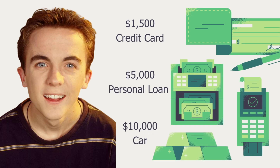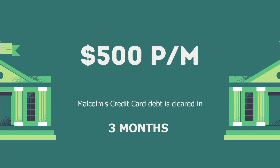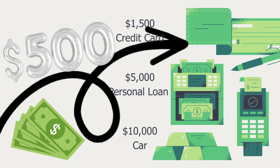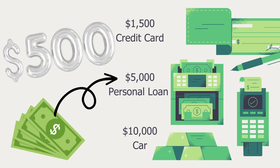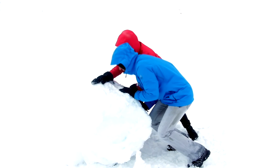Let's take a look at an example. Malcolm has three debts: $1,500 on a credit card, $5,000 on a personal loan, and $10,000 on a car loan. Using the debt snowball method, Malcolm focuses on paying off the credit card first. By budgeting carefully and allocating an extra $500 every month, he clears the credit card debt in just three months. He then applies the $500 to his personal loan minimum payment, accelerating its payoff. As Malcolm eliminates each debt, his debt snowball grows larger, enabling him to pay off the car loan even faster.